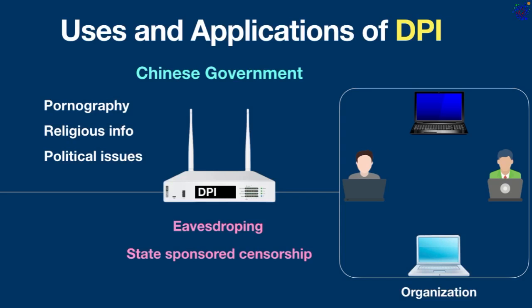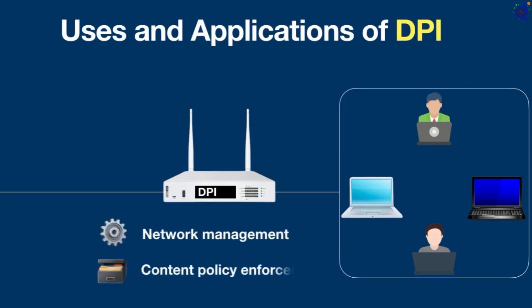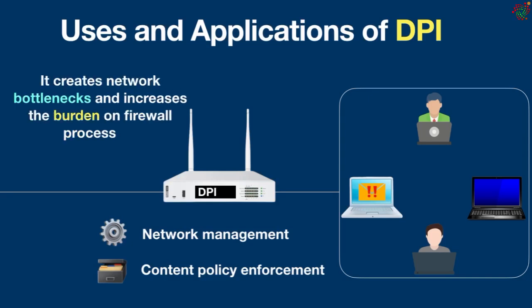Deep packet inspection is also useful for network management and content policy enforcement, to stop data leaks, and to streamline or modify the flow of network traffic. For instance, if you have a high-priority message, you can use DPI to enable it to pass through immediately ahead of lower-priority messages. If you have problems with peer-to-peer downloads, you can use DPI to throttle or slow down the rate of data transfer. However, DPI has one big drawback: it can reduce network speed and performance because it creates network bottlenecks and increases the burden on firewall processes for data decryption and inline inspection.